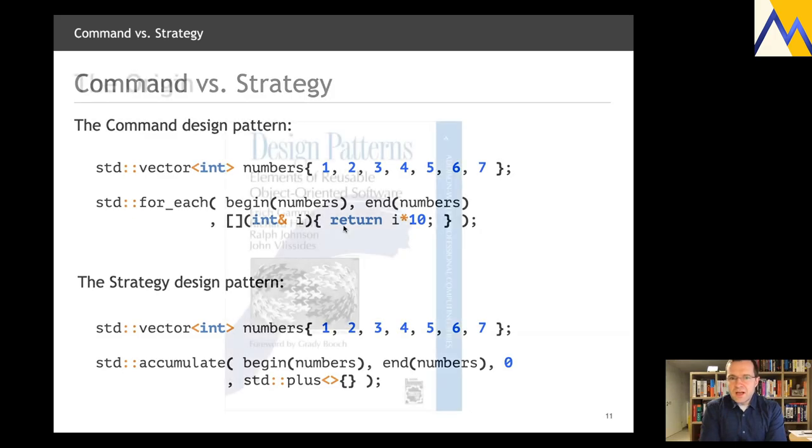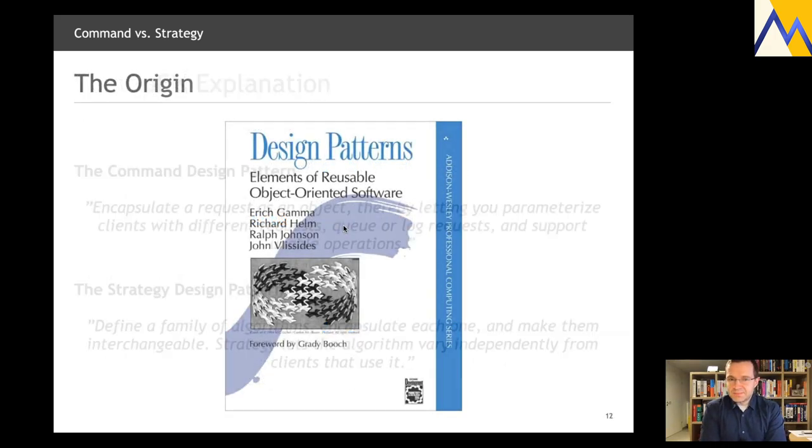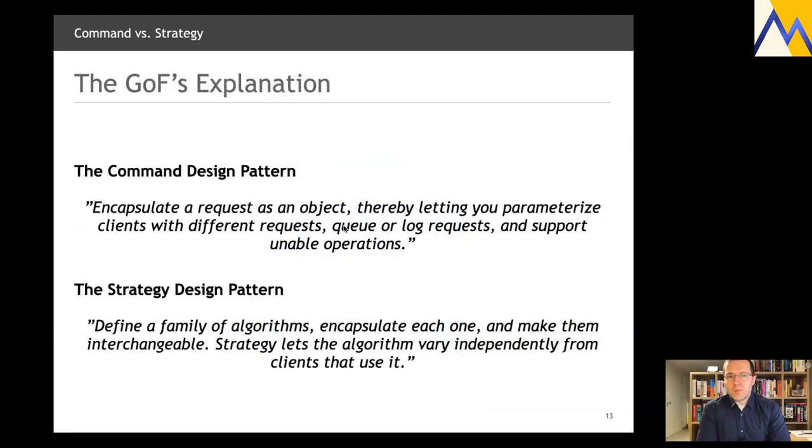Let's take a look at what the Gang of Four tells us, how they describe these two design patterns. This is what they say, as an introduction explanation, about the command design pattern: Encapsulate a request as an object, thereby letting you parameterize clients with different requests, queue or log requests, and support undoable operations. Well, this is the short introduction. And there is 10, 12 more pages that explain it in more detail. But then they say the following about the strategy design pattern. Again, the short, crisp definition: Define a family of algorithms. Encapsulate each one. And make them interchangeable. Strategy lets the algorithm vary independently from clients that use it. Now, perhaps you can immediately read some higher meaning into that. Perhaps you see a difference. But I believe this is still kind of vague.